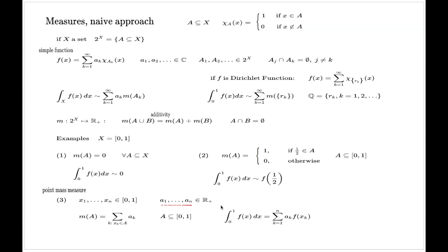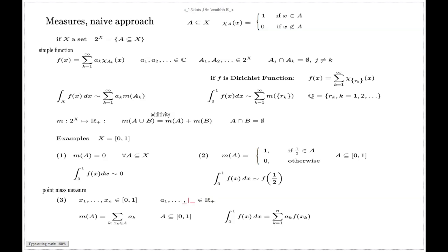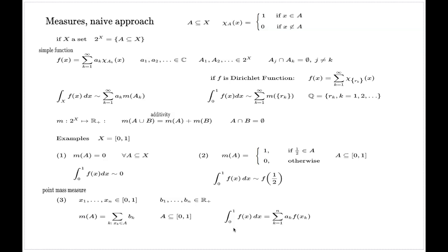Just to avoid confusion: the B_K coefficients in the point measure have nothing to do with the A_K coefficients in the simple function. To make this clear, I've changed the notation for the weights to B_K throughout, so the two sets of coefficients are clearly distinguished.